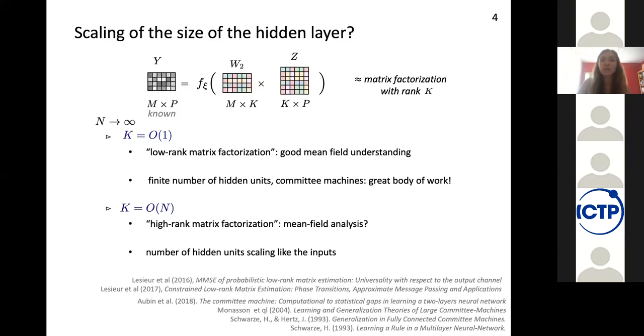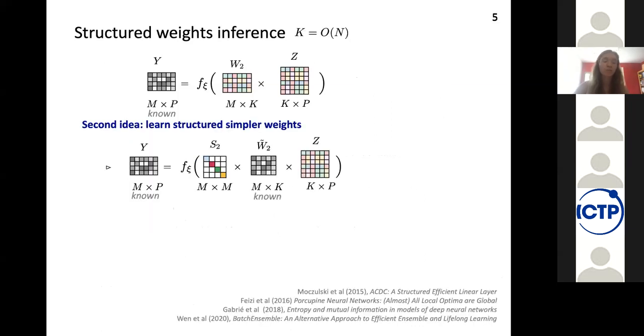So how can we go around this problem and still tackle our inference of deep neural networks with extensive number of hidden units? Well, the second idea that we have been exploring is to ease a bit the problem and instead of looking at inferring a complete W2 matrix, try to look at a certain structure of the W2 matrix. So we will assume that now W2 is decomposed into a known part, a random W2 tilde, and a diagonal matrix. So that has only non-zero entries on its diagonal that are the degrees of freedom of the learning in the second layer.